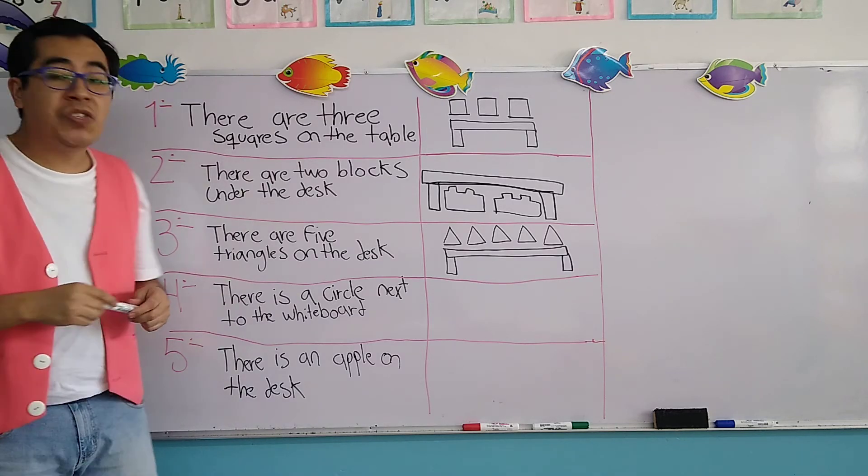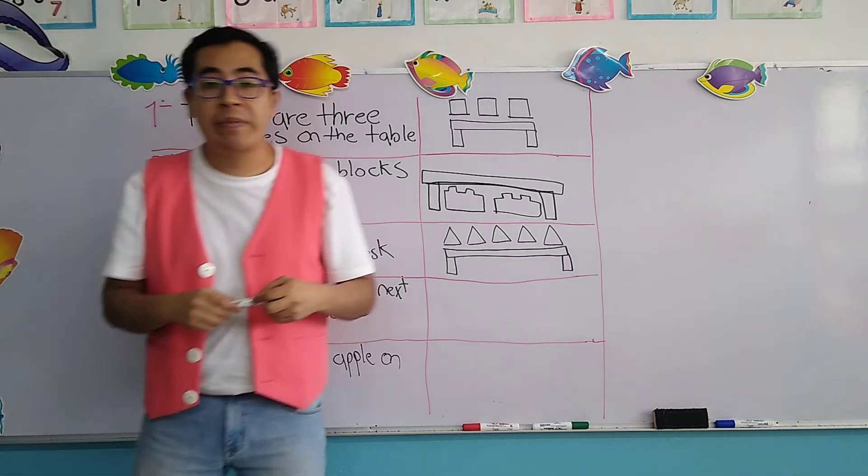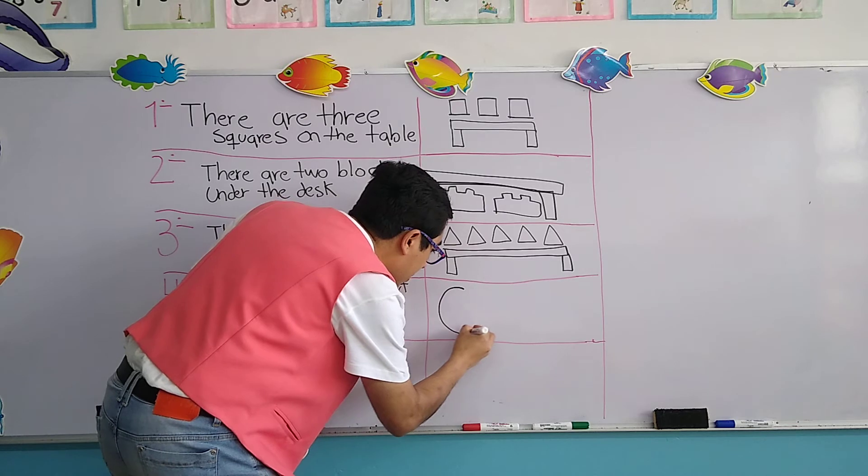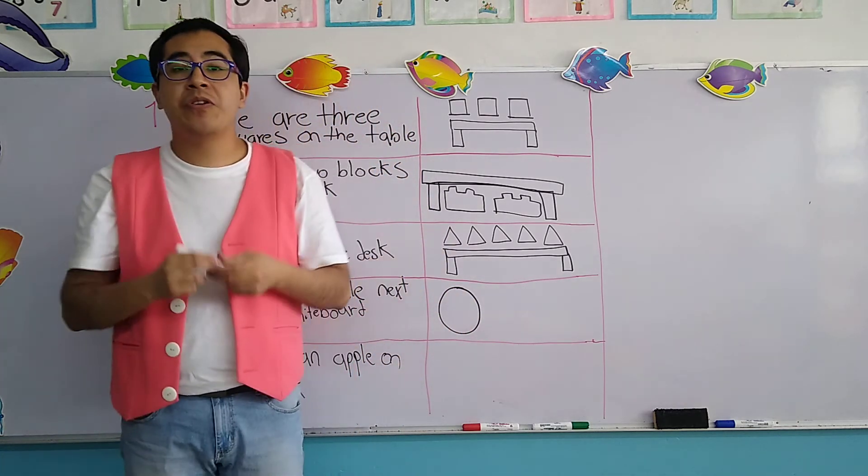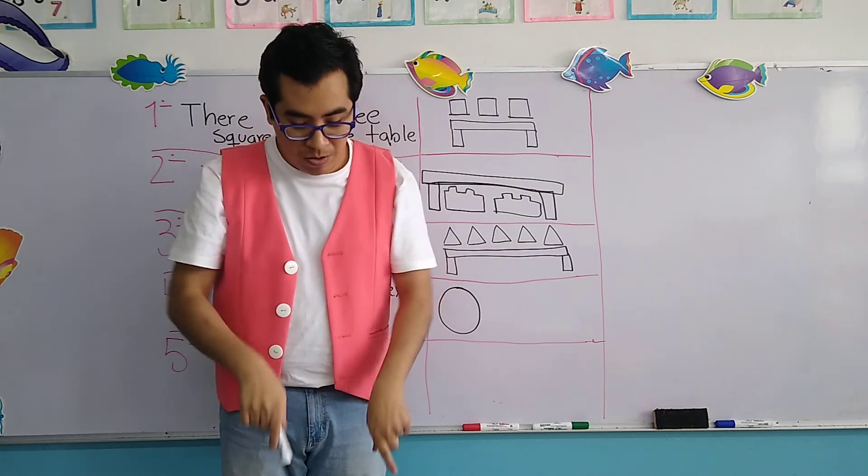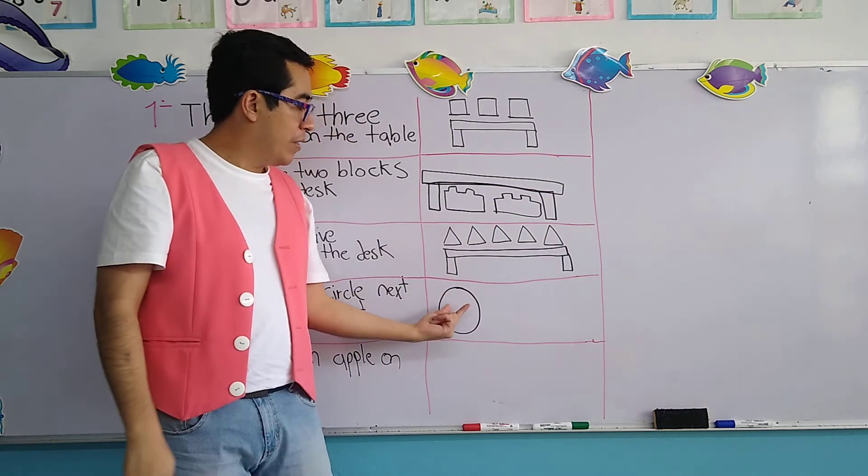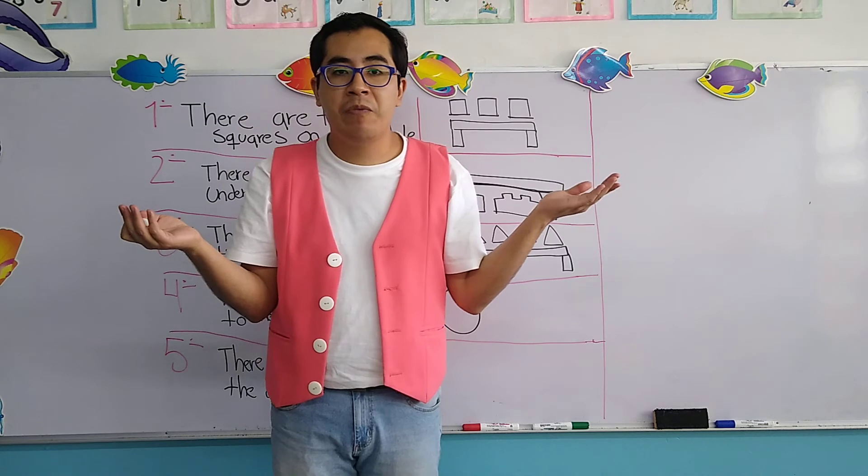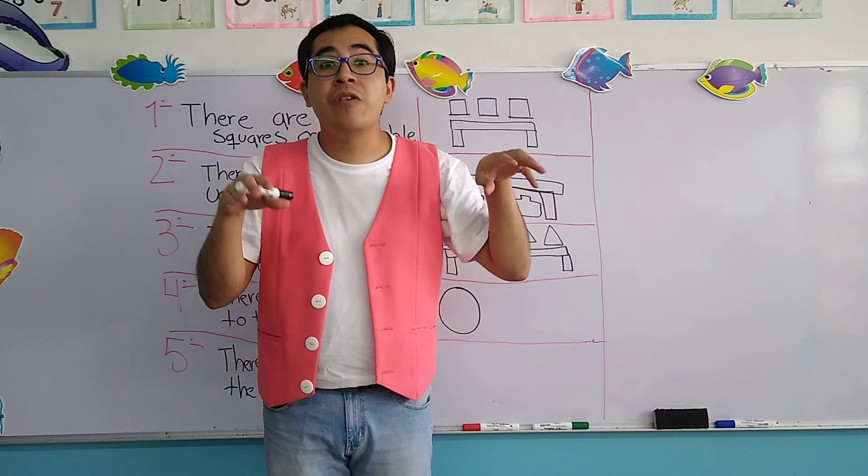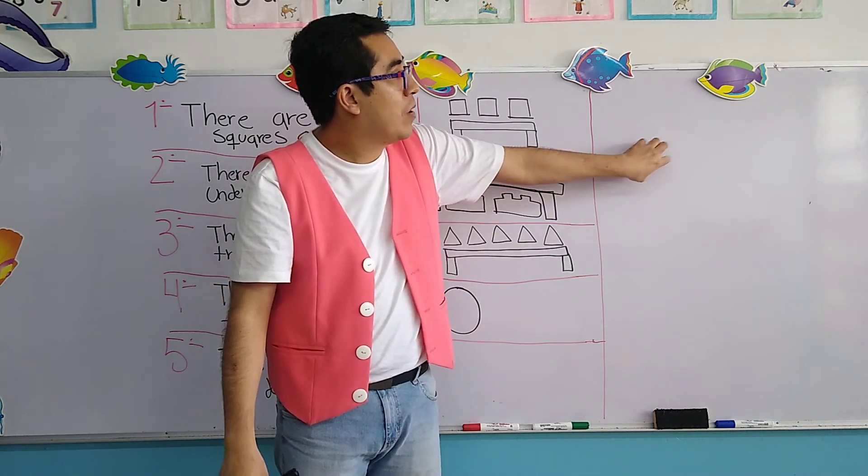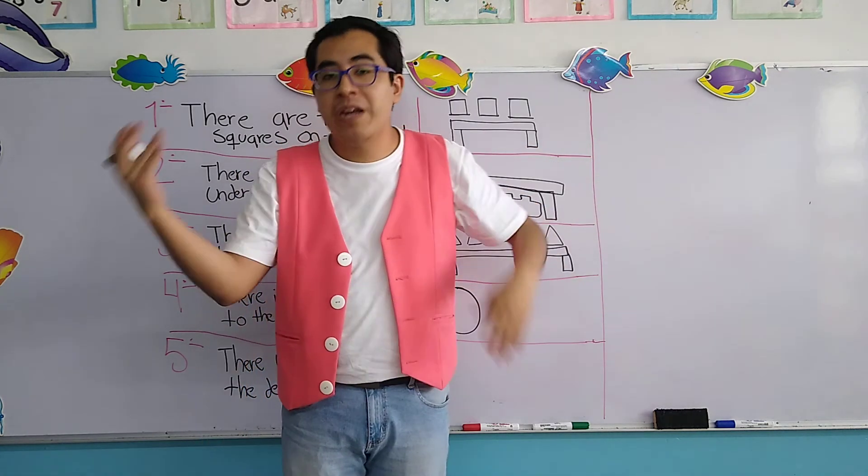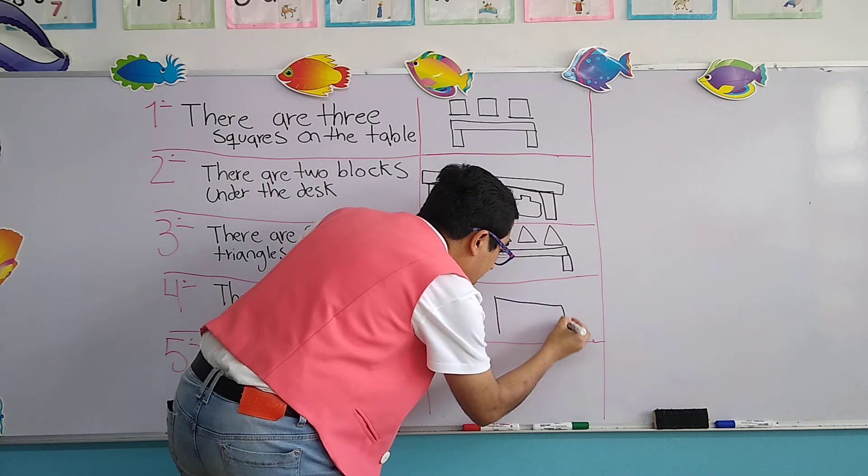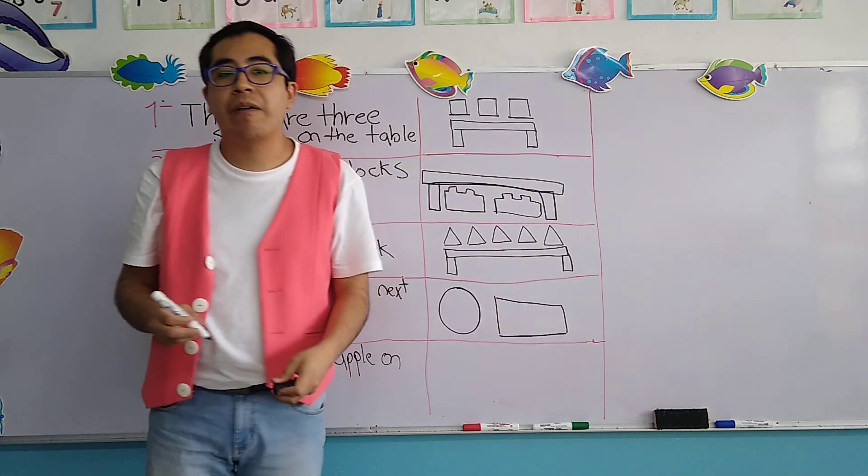Let's continue with number four. The number four says, there is a circle next to the white board. So the first object is a circle. There is a circle next to. Do you remember the preposition next to? Remember on, under, next to. There is a circle next to the white board. Now, do you remember what is a white board? It's an important object we use here in the classroom. This object right here is a white board. In Spanish, pizarrón. So there is a circle next to the white board, and the white board looks similar to a rectangle.